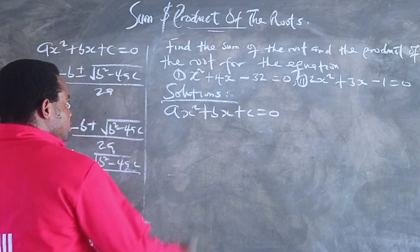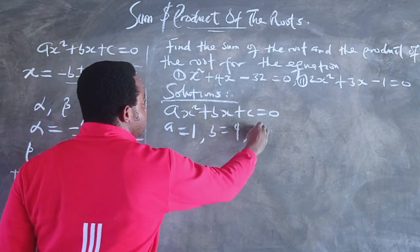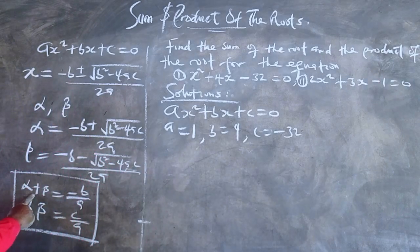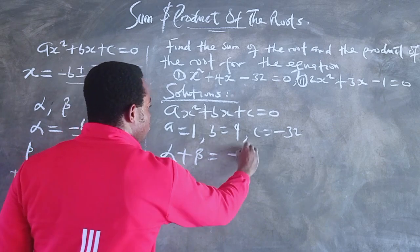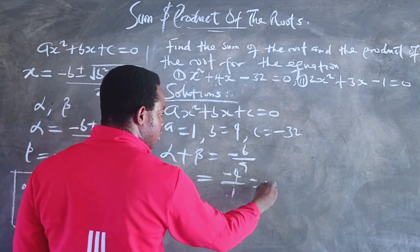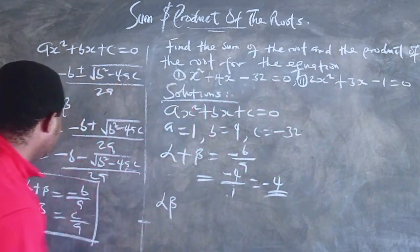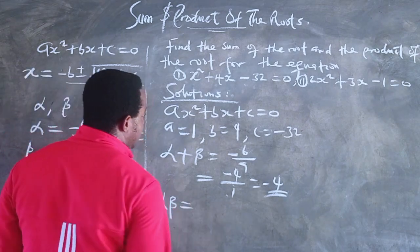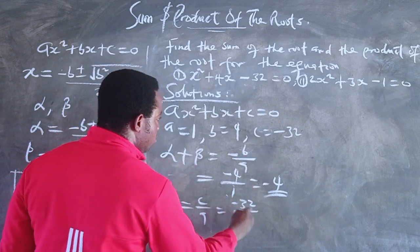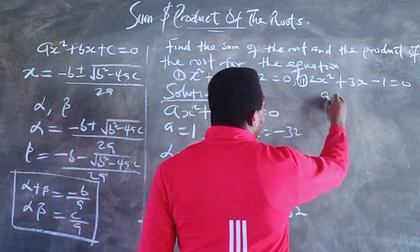Comparing with the standard form, we identify a = 1, b = 4, and c = -32. The sum of the roots, alpha + beta = -b/a = -4/1 = -4. The product of the roots, alpha × beta = c/a = -32/1 = -32. And just like that, we have found both the sum and the product of the roots without solving the quadratic equation.